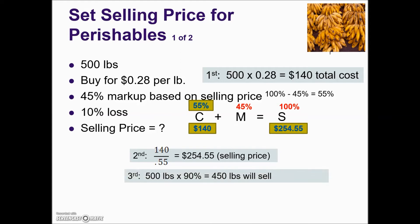The next step is to determine the number of pounds that will be sold. She purchased 500 pounds, and because there is a 10% loss, 100% minus 10% leaves 90% being sold. So we now know 450 pounds will sell.